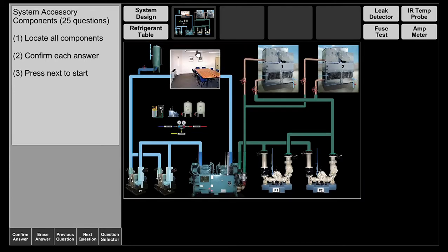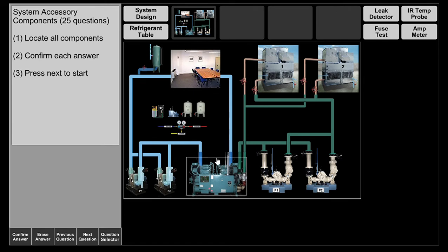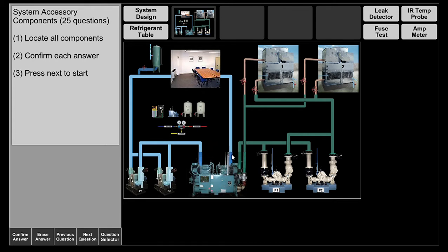Chilled water serves as the secondary refrigerant — the primary refrigerant is only inside the chiller. Chilled water comes out at 45 degrees, enters the room, and as it blows cool air it picks up heat. Utilizing the 10-degree rule, we now have 55-degree water, which increased 10 degrees due to the heat load in the room.